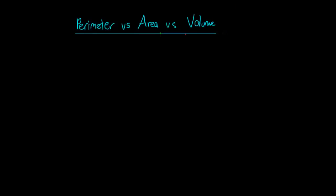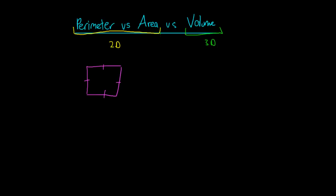Hey guys, so in this video we're going to be looking at perimeter versus area versus volume. The easiest way to start thinking about it is with a square. Perimeter and area refer to two-dimensional shapes, and volume applies in three dimensions. We'll start by looking at perimeter, then area, and then move on to volume.